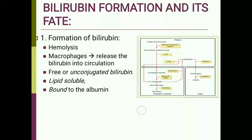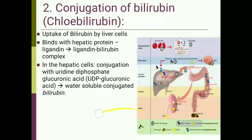Binding of bilirubin with albumin prevents its excretion by the kidneys. The second step is conjugation of bilirubin, also known as coli bilirubin. The unconjugated bilirubin, which is bound to albumin, is taken up from circulation by liver cells — the hepatocytes. In the hepatocytes, it binds with hepatic protein ligandine, and this ligandine-bilirubin complex prevents backflow of bilirubin into the circulation.